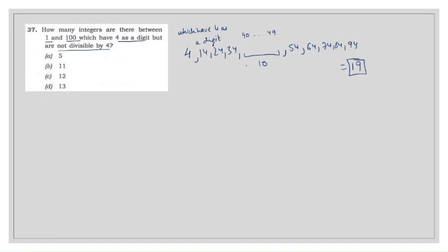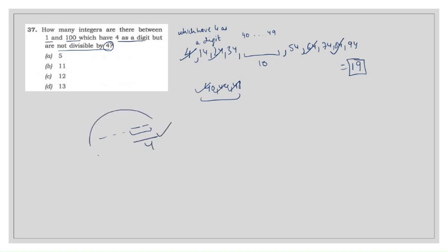Out of these 19, we remove those divisible by 4 to get those that are not. To check divisibility by 4, we check the last 2 digits — if the last 2 digits are divisible by 4, the whole number is divisible by 4. From our list: 4, 24, then from 40–49 we have 40, 44, and 48, then 64 and 84 are divisible. That gives us 7 numbers divisible by 4.